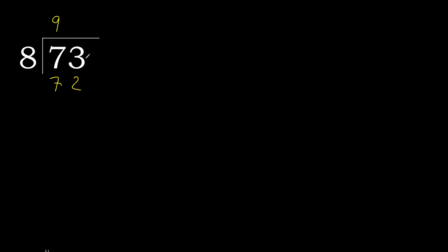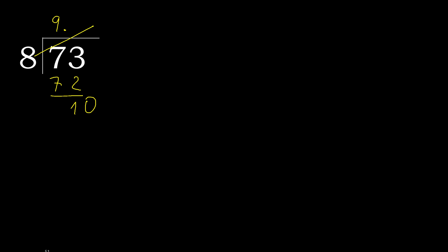72 is not greater, subtract. 1 remains. There is no next number, therefore complete — always complete with 0, here with a decimal point. 0, point, complete. Point 10. 8 multiplied by 2 is 16, that is greater. Multiplied by 1 is 8, not greater. Subtract 2, complete.